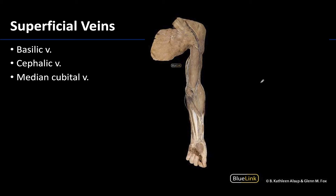Those two major superficial veins are the cephalic vein, which I'm outlining right here, and it is going to be more lateral. You can actually see this vein's pathway for quite a bit longer than you will for the basilic. You can see it pretty clearly here between the deltoid muscle and the pectoralis major muscle.